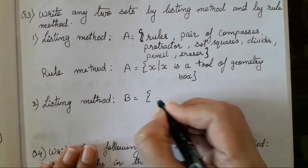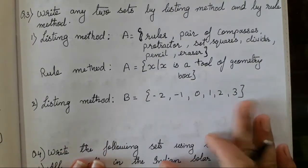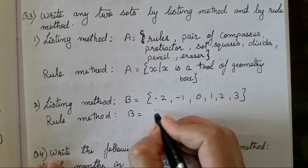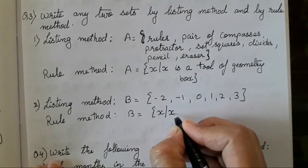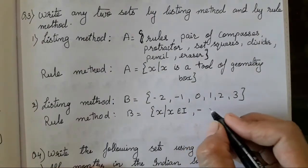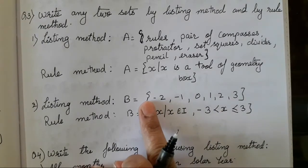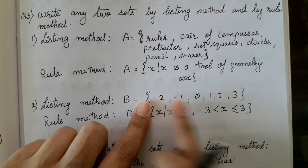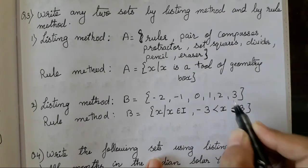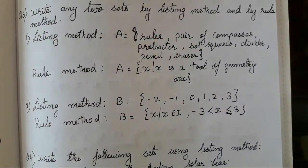Now listing method for another example, we will take B is equal to minus 2, minus 1, 0, 1, 2 and 3. You all can take any example. Now the same, I will write it in rule method, B, X such that X is an integer, right? Which is greater than - X is greater than minus 3. Because we are starting from minus 3, isn't it? We have left minus 3, so it is less than minus 3, that is minus 2, minus 1, till greater 1 is 3. So greater and is equal to, that means till 3, we have to write it. Clear children, these are the small things that you all have to learn from each and every example. Every example is different in this exercise.